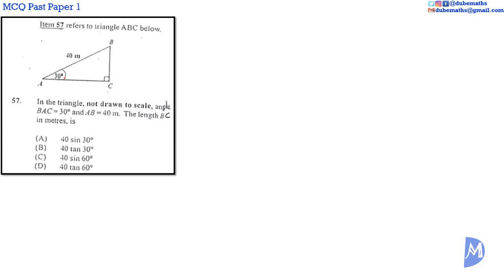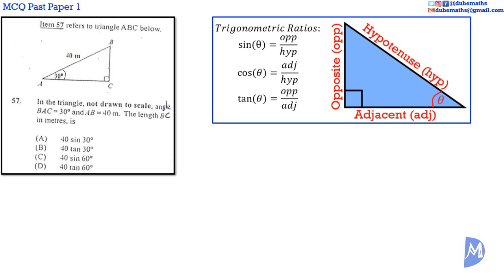In a right angle triangle, we are considering an angle, the hypotenuse, and the opposite. The related ratio is the sine ratio. So, sine theta is equal to opposite over hypotenuse. Therefore, sine of 30 degrees is equal to the opposite BC over 40 meters.